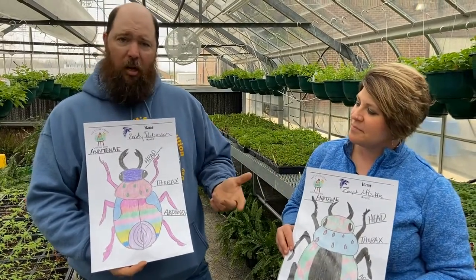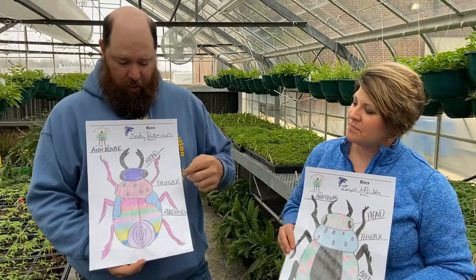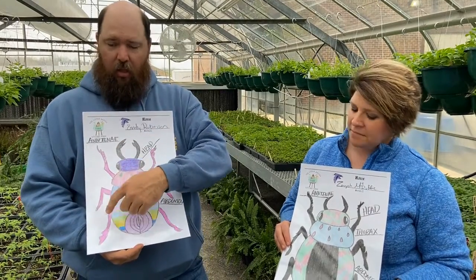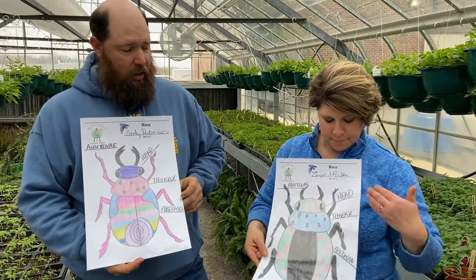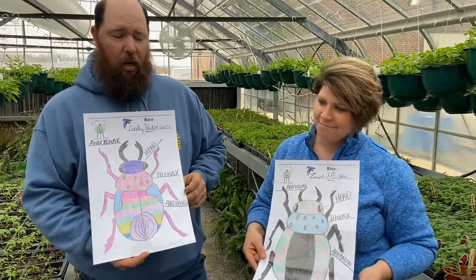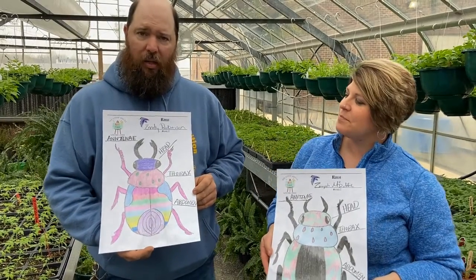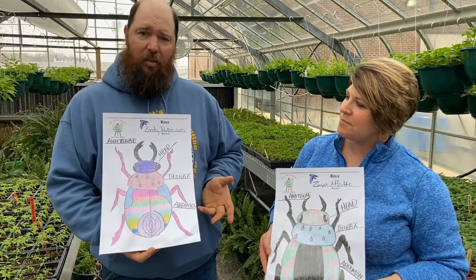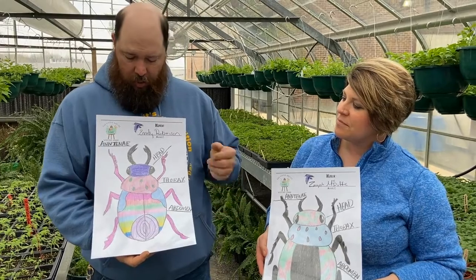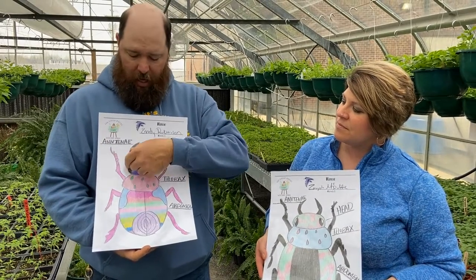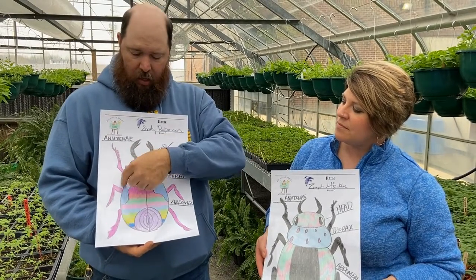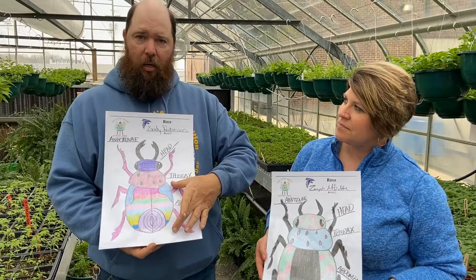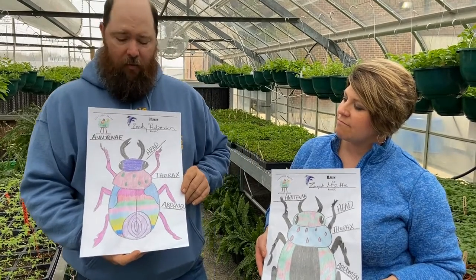When we start talking about some special features of insects, all insects have six legs, so they have three legs on each side. When we look at other animals, that's not the case. Another thing that makes insects a little bit unique is they have three body sections. They have a head, they have a thorax, and they have an abdomen. So those are special features that they have as well.